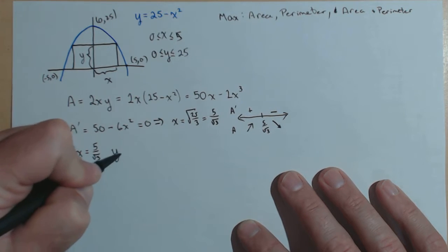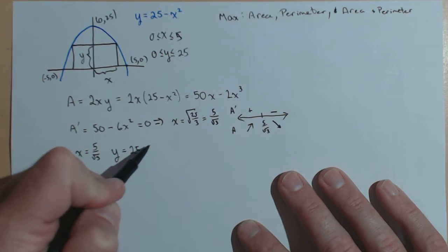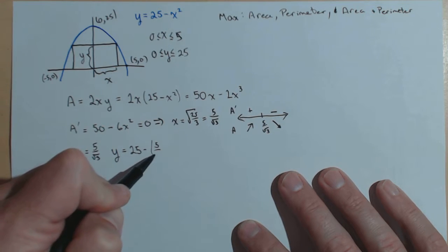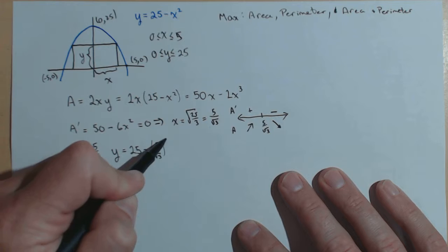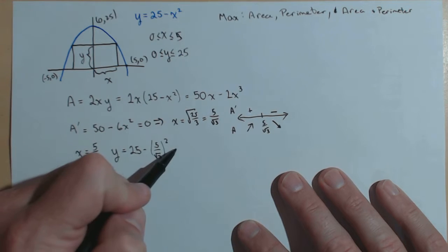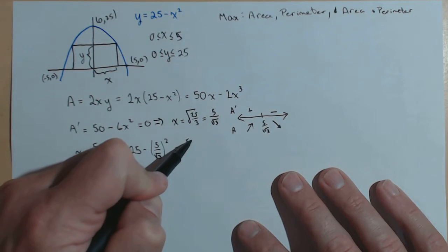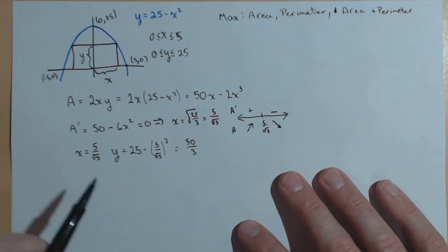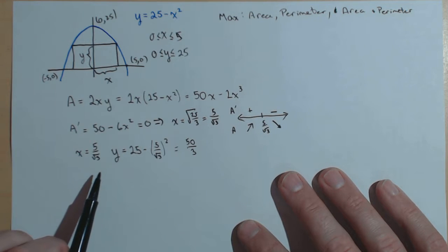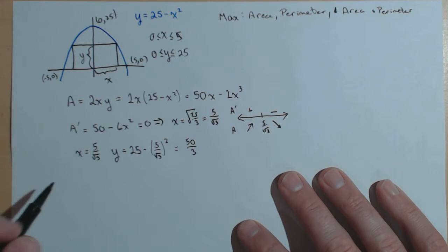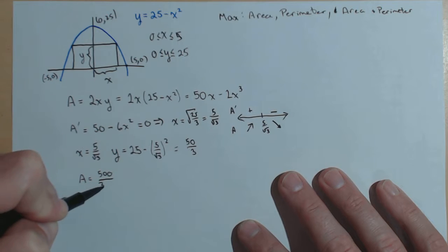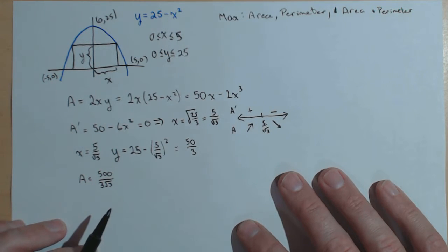Now to get our y, we plug it in, we have 25 minus 5 over rad 3 squared, which if you do the work on that, is 50 thirds. So there's the dimensions that yield the maximum area. If you want to actually multiply that out, you're going to get 500 over 3 rad 3 is our maximum area for this situation.